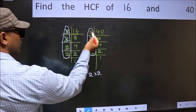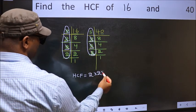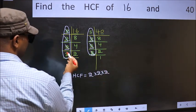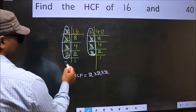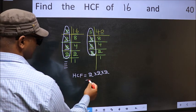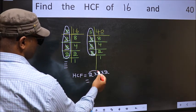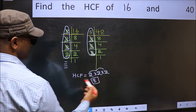Next number 2. Do we have 2 here? No. No more numbers have been left out. So our HCF is 2 times 2 is 4, times 2 is 8. 8 is our HCF.